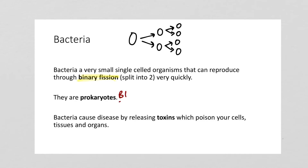Prokaryotes are very different from eukaryotes — you and I are eukaryotes, while bacteria are prokaryotes, meaning they don't have a nucleus or organelles like mitochondria. The way bacteria cause disease is by releasing toxins, which are toxic waste products that poison your cells, tissues, and organs. The bacteria doesn't know or care that you're there — it's just living its life and releasing metabolic waste products. For pathogenic bacteria, those waste products are harmful to us, and that's how bacteria cause disease.